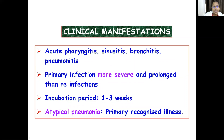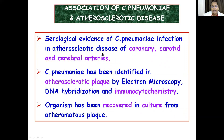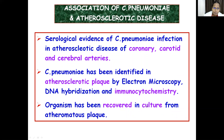Atypical pneumonia is the primary recognized illness caused by Chlamydia pneumoniae. There is an important association of C. pneumoniae with atherosclerotic disease — specifically its effect on coronary, carotid, and cerebral arteries. There is serological evidence of C. pneumoniae infection in atherosclerotic disease, and it has been identified in atherosclerotic plaques by electron microscopy, DNA hybridization, and immunocytochemistry. This organism has been recovered in cultures from atheromatous plaques isolated from arteries.